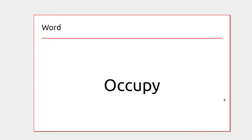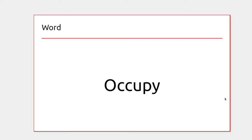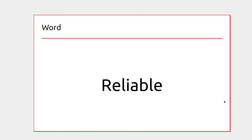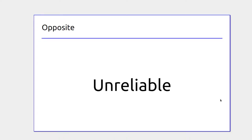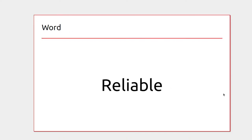You could occupy a house on a lease, and when you move out you vacate. If you get a lease and move in you'd be occupying it, and moving out is vacating. A car that's reliable turns on every day and gets you where you need to go. The opposite is unreliable — it might break down with no notice.